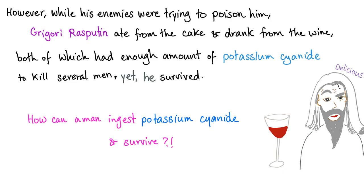You know the story because I've told you before. His enemies were trying to poison him. They gave him cake and wine that contained cyanide. Yet Rasputin managed to survive. How did he do it?